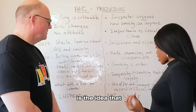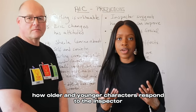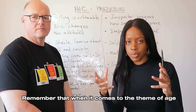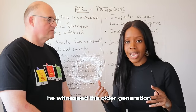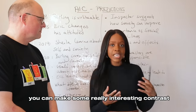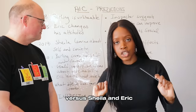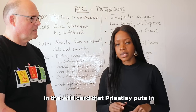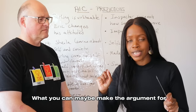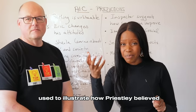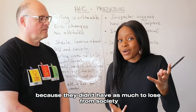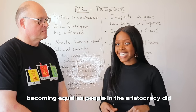The second 2023 question was about how older and younger characters respond to the Inspector — essentially a dressed-up question on the theme of age. Priestley was pessimistic about the older generation and believed social change would be driven by the younger generation. This lets you make interesting contrasts between Mr. and Mrs. Birling versus Sheila and Eric. The wild card is Gerald: technically younger, but unwilling to change. Priestley uses Gerald to suggest that social change would be driven by the upper-middle classes, who had less to lose from an equal society than the aristocracy did.